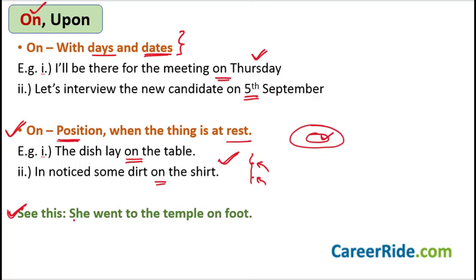Whenever we want to say that we are traveling — coming by train, by auto, by bus — we say 'by train,' 'by auto,' 'by scooter.' But whenever you want to communicate that you are walking down to some place, then you say 'on foot.' This is the right use of preposition 'on.' 'She went to the temple on foot' — you would not say 'by foot.' Pay attention to this one because this is a place where we commonly commit a mistake.